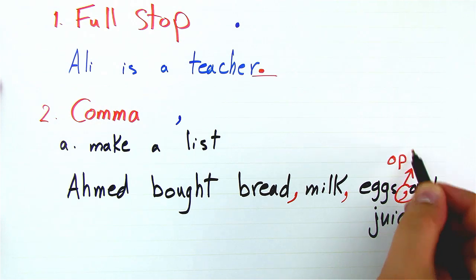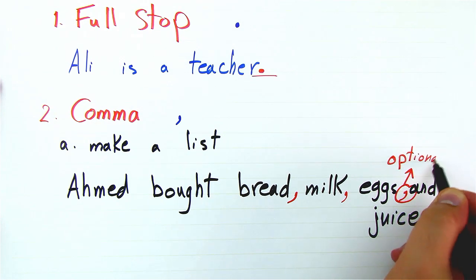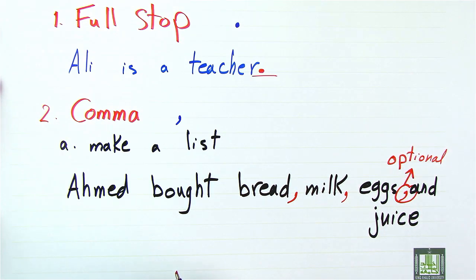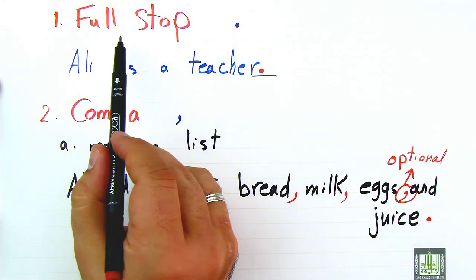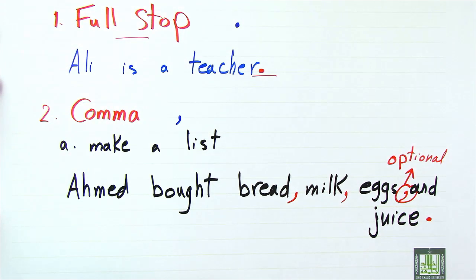And before the last thing we can have a comma, but this comma is optional. You can do with it or without it. And at the end of the sentence we have a full stop to indicate that this is the end of the sentence.